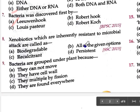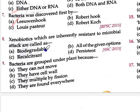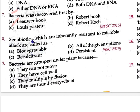Xenobiotic compounds which are inherently resistant to microbial attack are called — recalcitrant. Xenobiotic compounds are chemical substances that are foreign to animal life, acting as a foreign substance. When microbes come, they cannot attack these compounds — they are resistant to microbial attack. Such xenobiotic or chemical substances which are resistant to microbial attack are called recalcitrant.